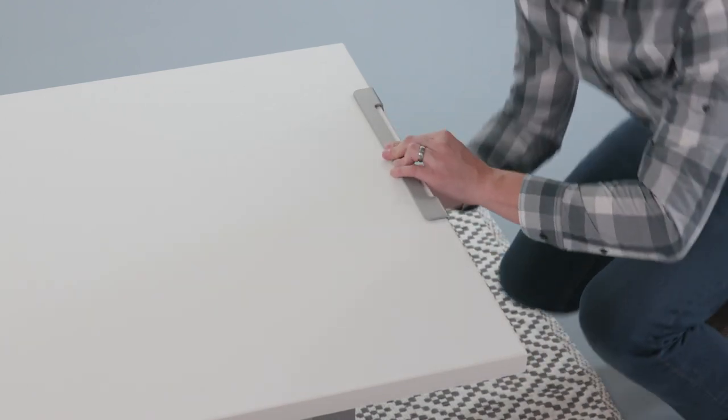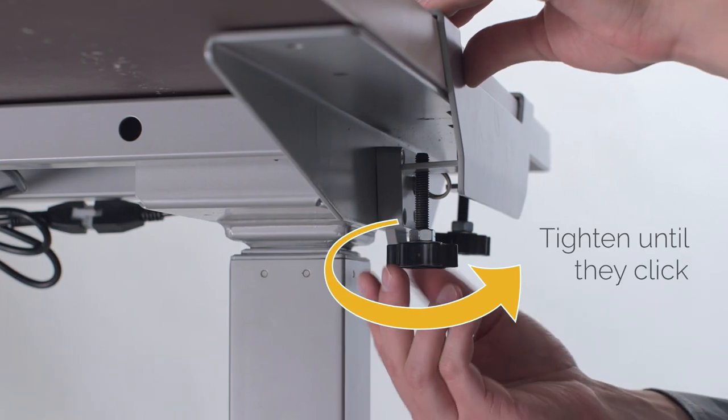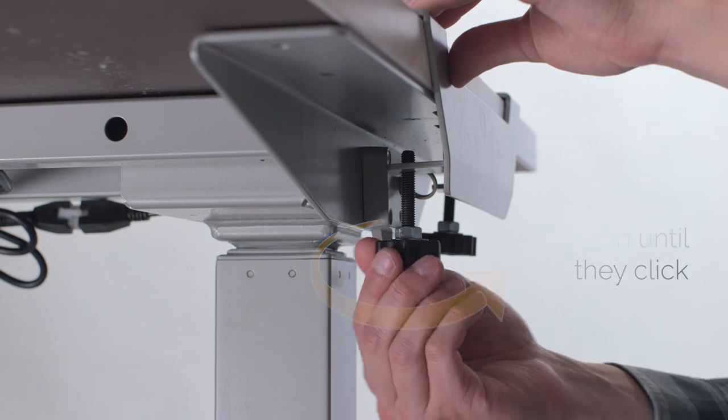Then take the clamps and slide one on each side of the table. To secure them, tighten the thumb screws until you hear them click.